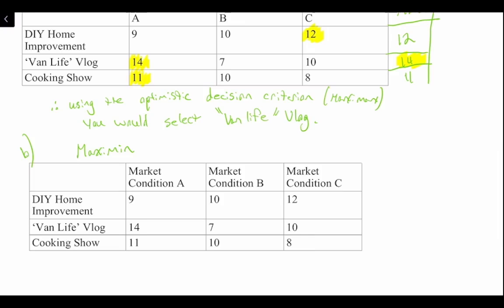For each one of our different genres, we identify the minimum payoff. For DIY, the minimum payoff is 9 million, since 9 < 10 < 12. For van life, the minimum is 7 million — that's if market condition B occurs. For the cooking show, the minimum is 8 million. So our minimums are: DIY = 9 million, van life = 7 million, cooking show = 8 million.